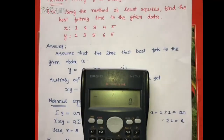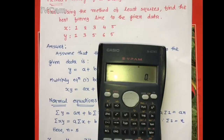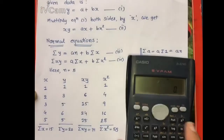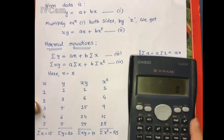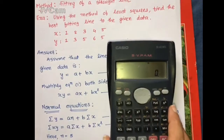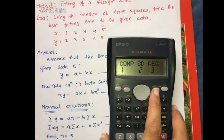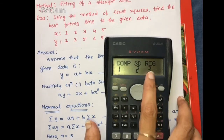We have our XY data given. To input the data and find all the summation values directly without making a table, press Mode after resetting your calculator, then press 3 for regression. Since we want to fit a line, press 1 for linear. The calculator is now set to find all the summation values.